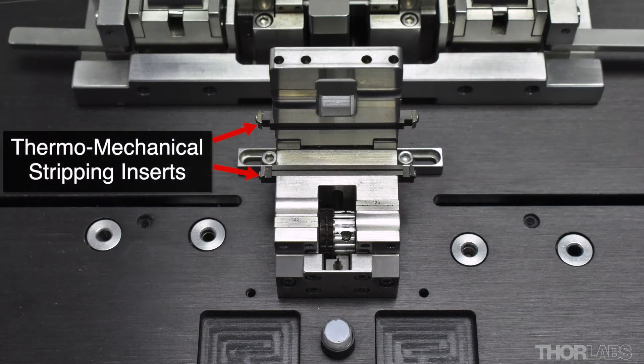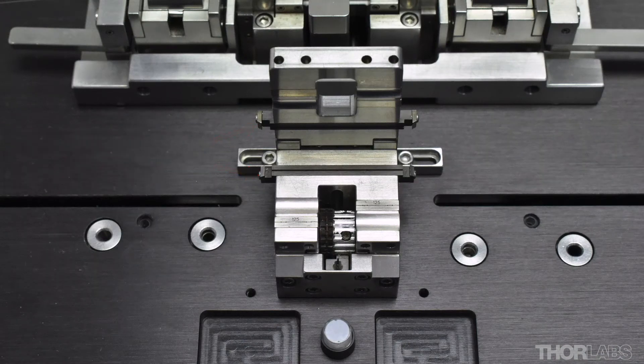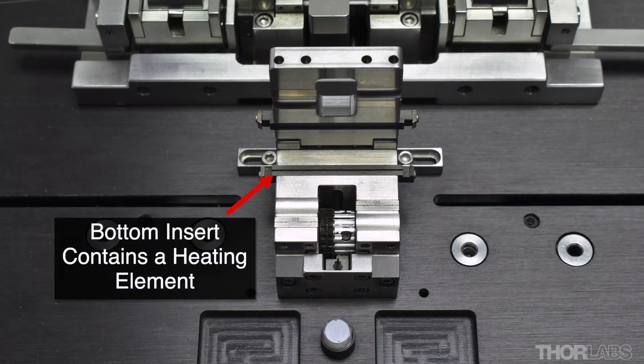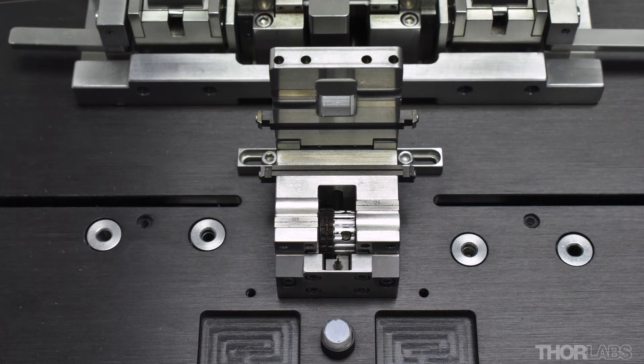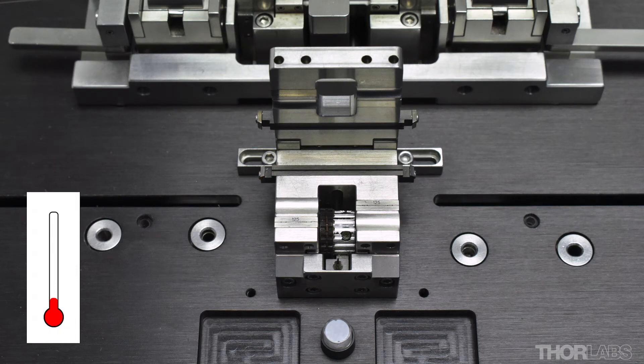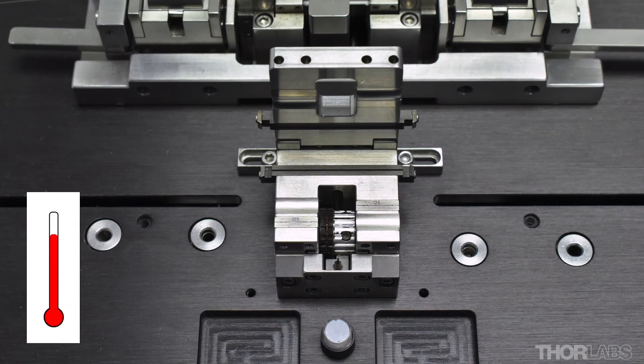The coating is stripped from the fibre using thermomechanical stripping inserts. The bottom insert contains a heating element used to soften the acrylate coating. The heating element is kept at a low background temperature whenever the unit is switched on. When the fibre holding block is pushed fully along the stripping slot, the current supplied to the strip insert rises to a boost current. This increases the temperature of the inserts to the stripping temperature.